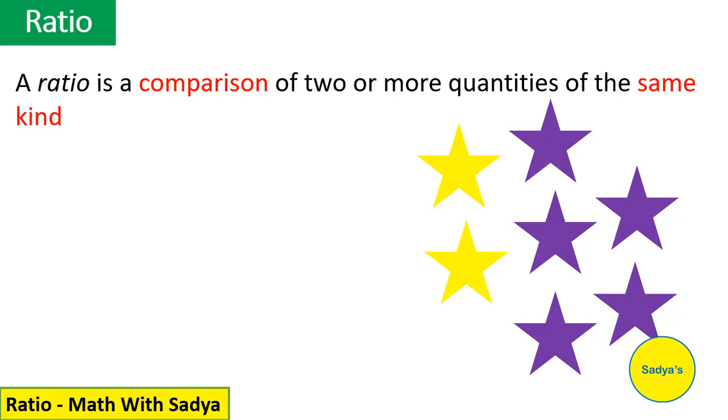Now, here we have five purple stars and two yellow stars. तो अब यह ratio हम कैसे लिखेंगे? We can write ratio in three ways. In words, we use the word 'to'. So, ratio of purple stars to yellow stars is 5 to 2.